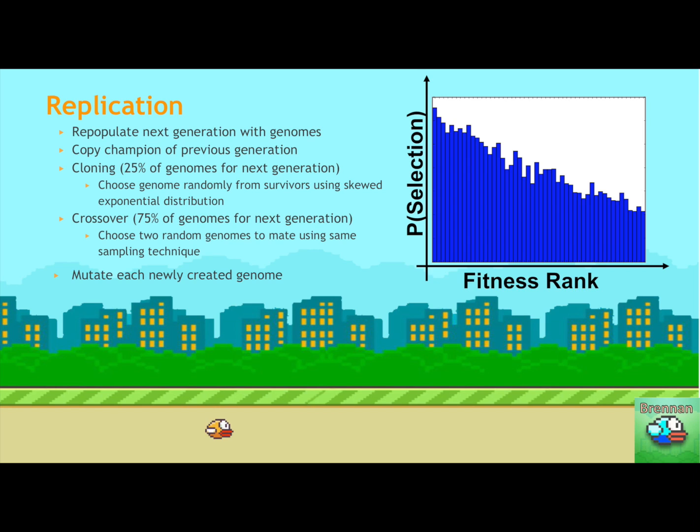And then with crossover, you choose, again, two random genomes using the same sampling technique to make them together to create a new child progeny. And after we've created all the genomes for our upcoming generation, we'll iterate through each genome individually and apply some mutation to them, which I'll talk about in a little bit.